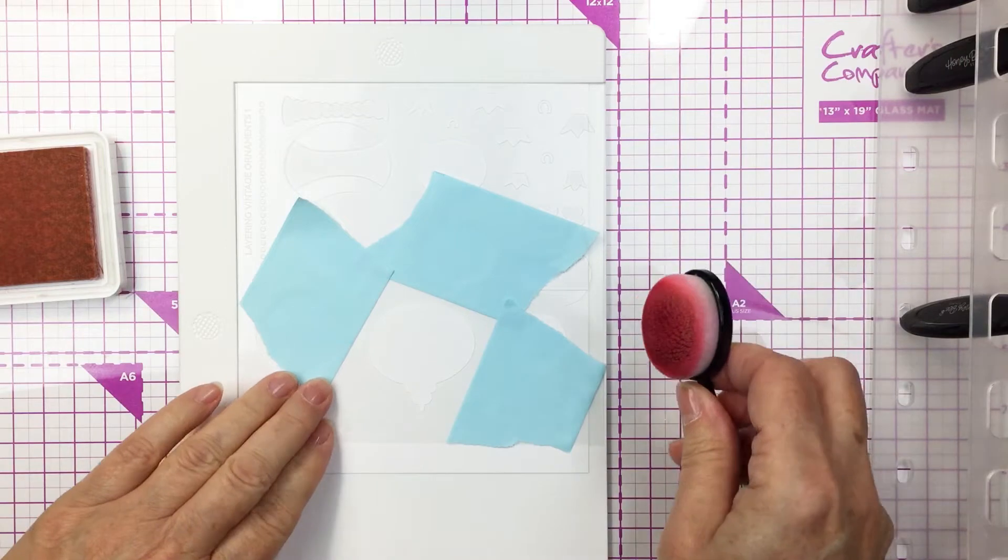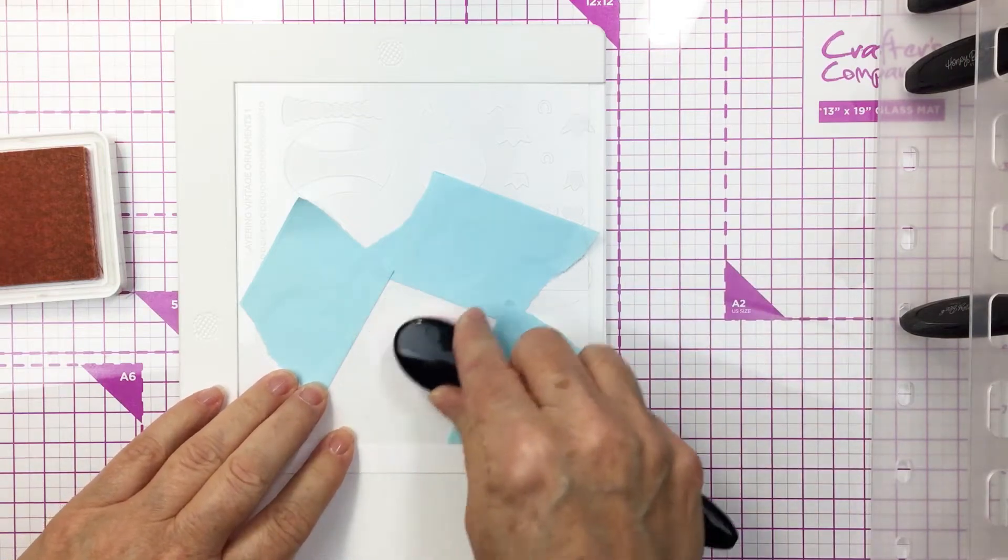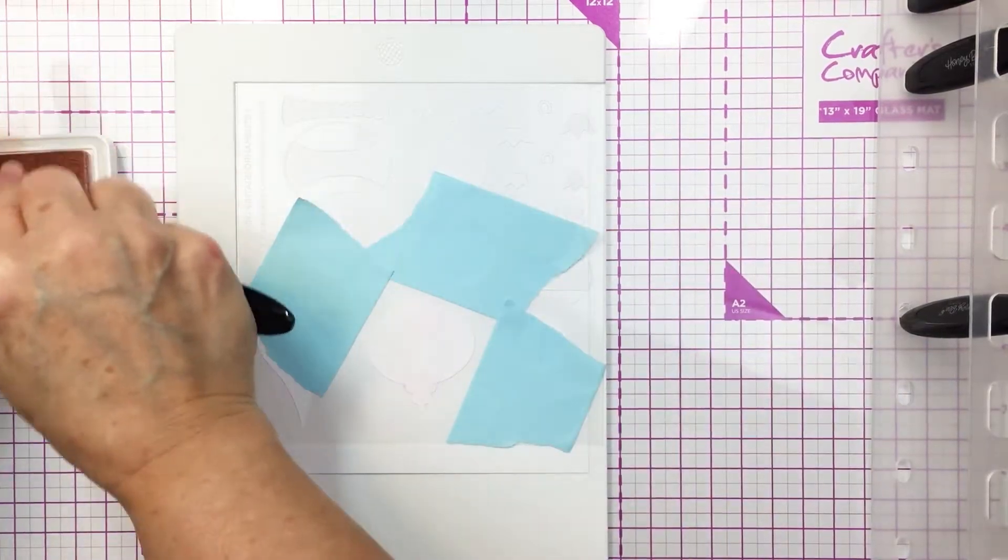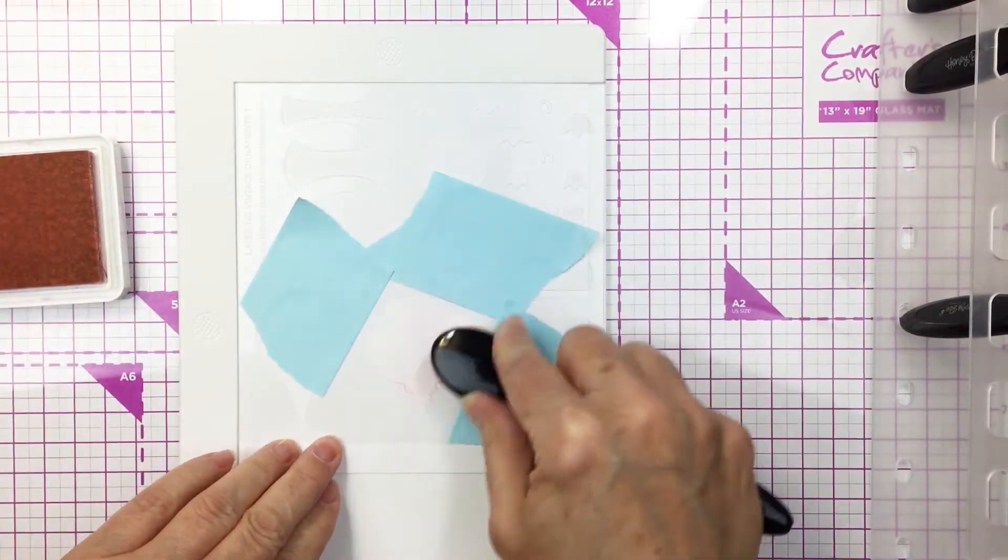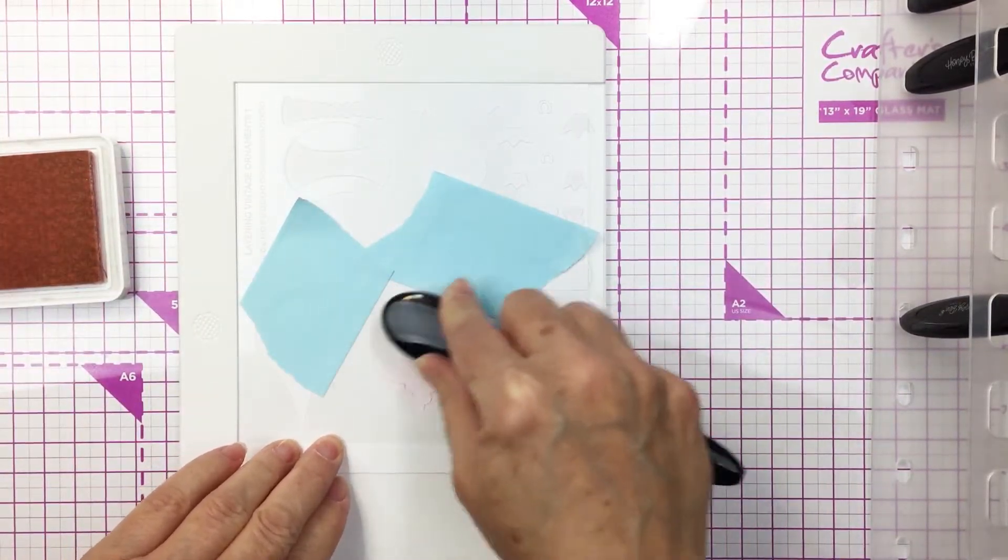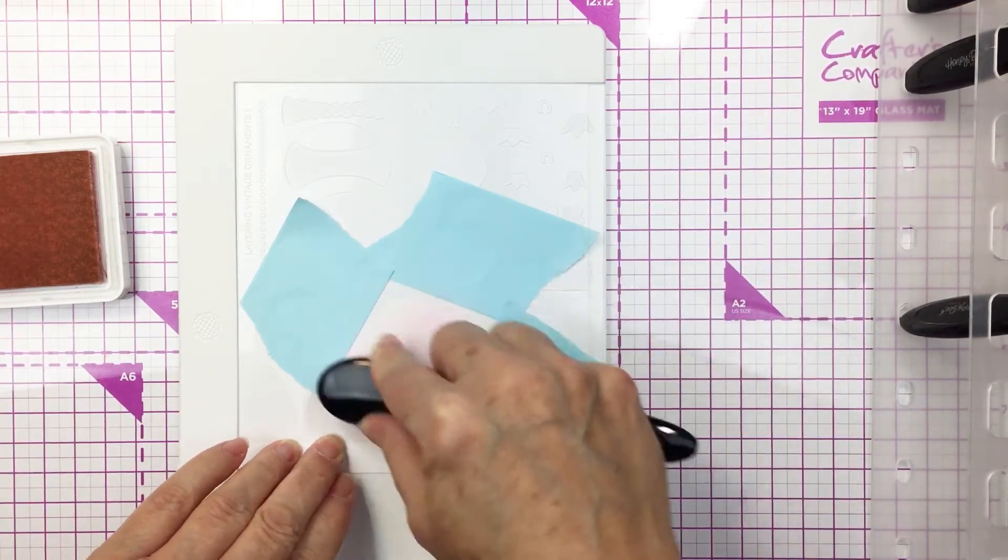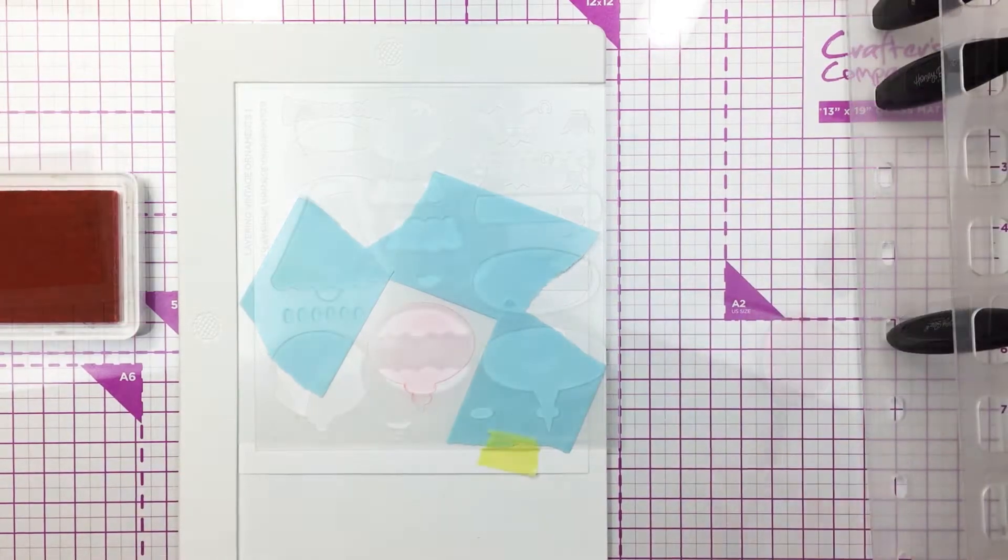I'm working on my Waffle Flower Media Mat, the smallest mat. I'm choosing one of the open areas on the stencil to create this ornament here on white cardstock, just blending on some ink using my Honey Bee blending brush.